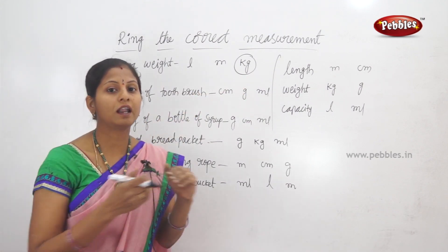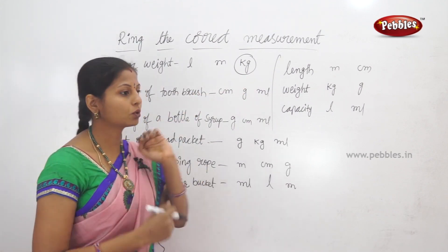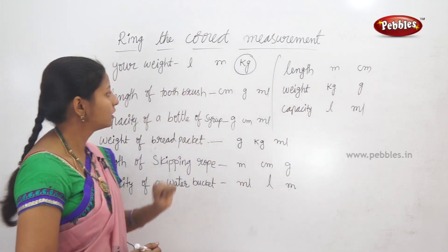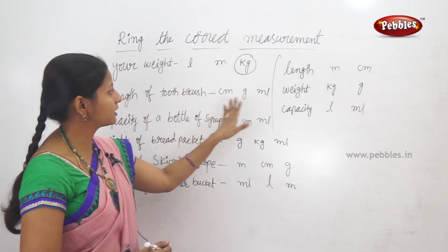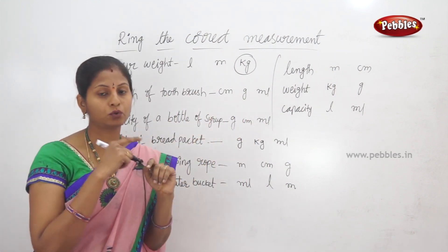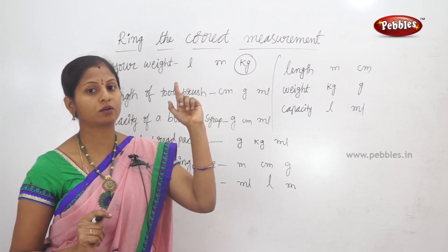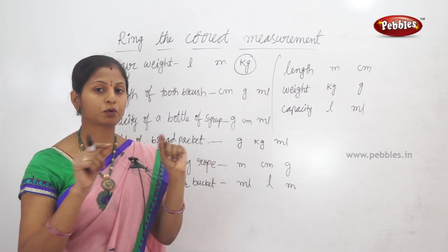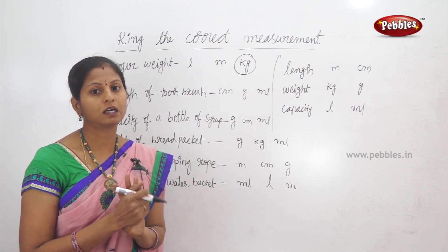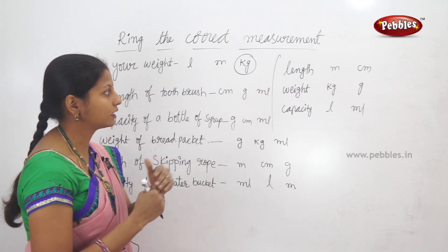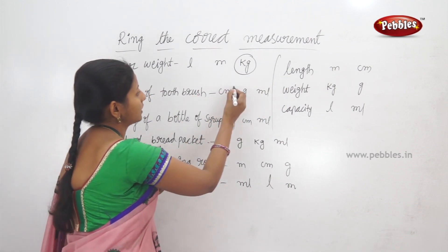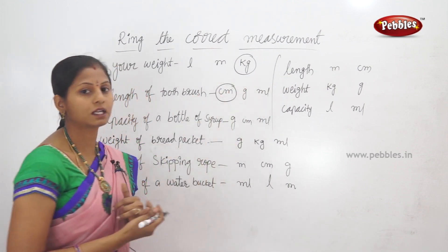Next: the length of a toothbrush. We measure length using meters and centimeters. The toothbrush is a short length. Short length is measured in centimeters. So here we make a circle for centimeters.